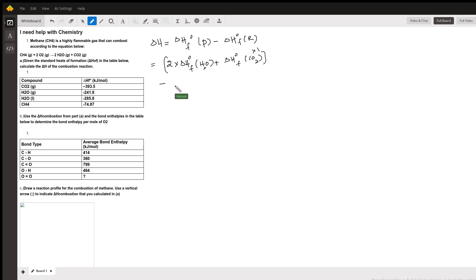Minus your reactants. So standard enthalpy of formation of your reactants, which is CH4 plus standard enthalpy of formation of oxygen times 2. But since oxygen is an element, its value is always 0. Standard enthalpy of formation of any element is always 0.